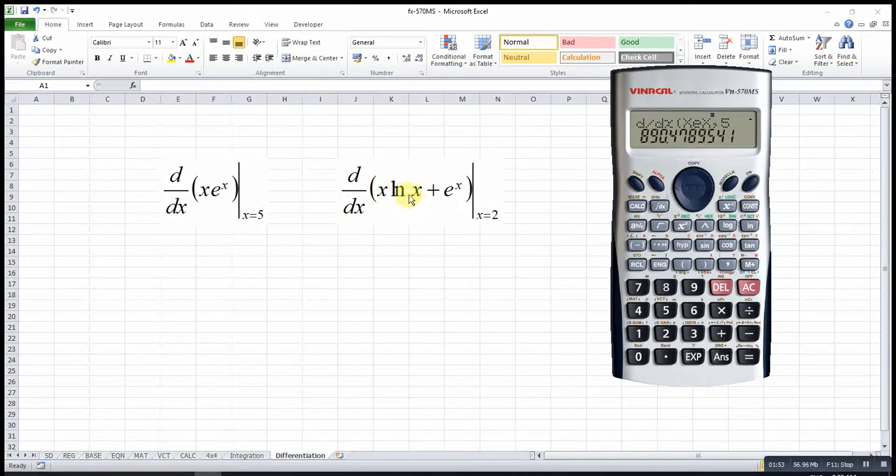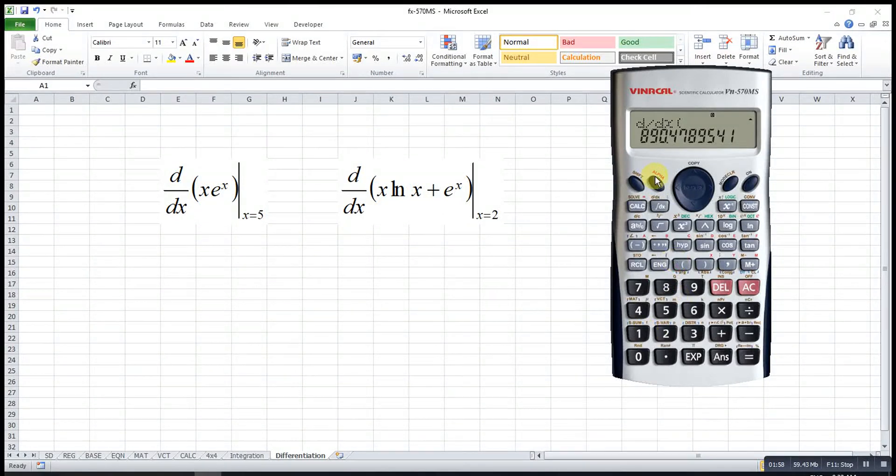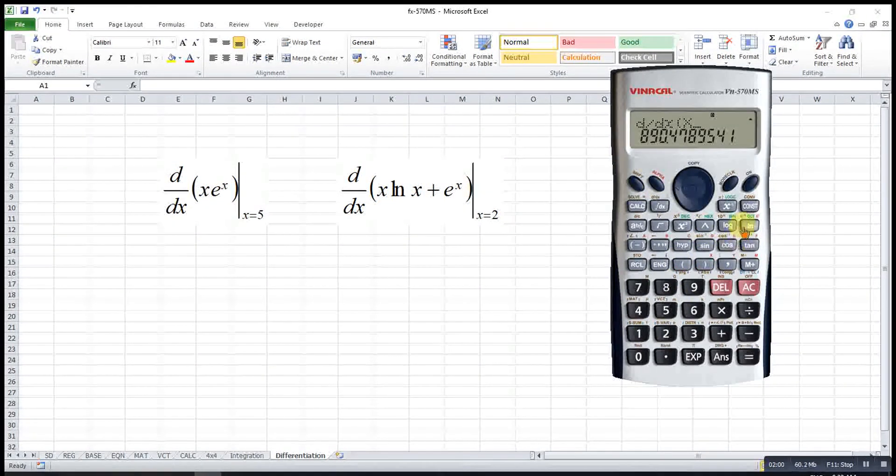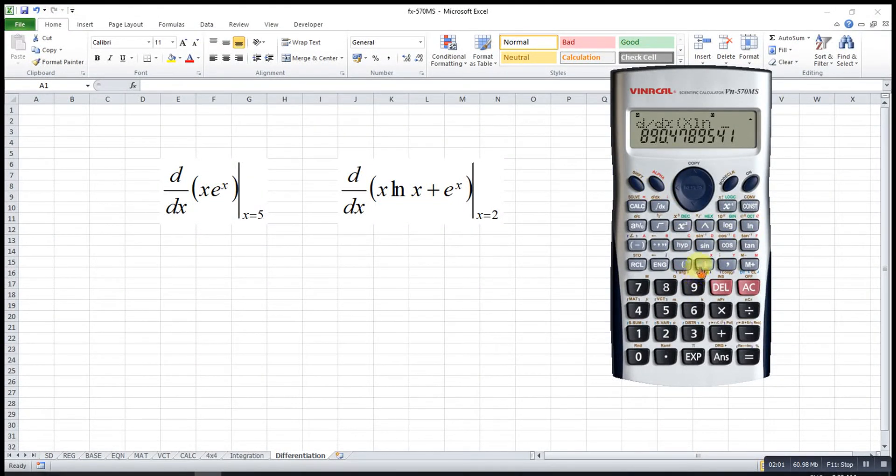And then for this one also, shift, alphabet x plus shift exponent, alphabet x, and comma 2. So this will be the answer.